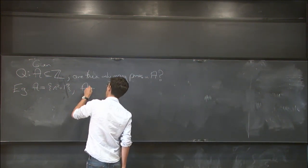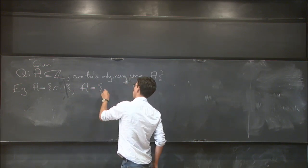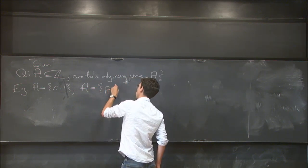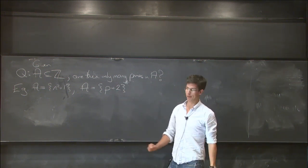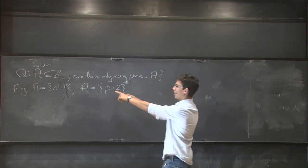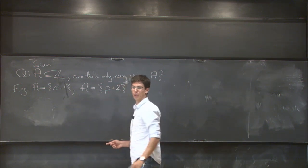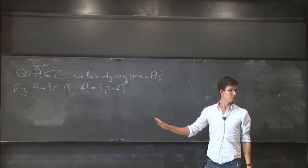Similarly, you could take a to be the set of prime numbers all shifted along by 2, and then this would be asking are there infinitely many twin primes. So these are two famous over 100 year old problems that we have no idea how to solve at all.